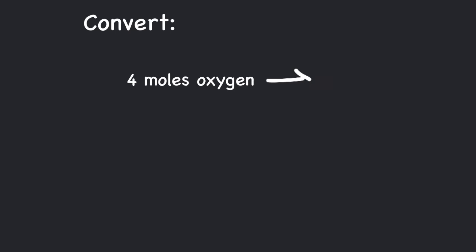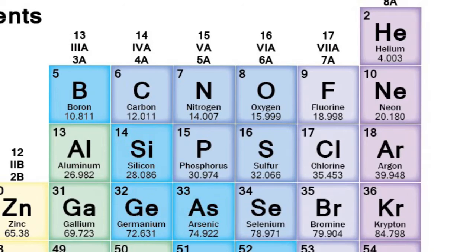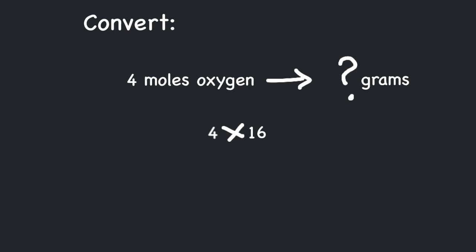So 4 × 16 = 64 grams. To find the number of atoms, when converting from grams to moles, simply divide by the atomic or molar mass.